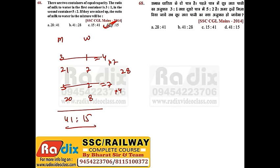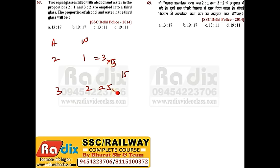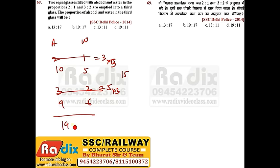Question 69. Two equal glasses are filled with alcohol and water. The ratio of alcohol to water is 2:1 in the first and 3:2 in the second. Find the proportion of alcohol in the mixture. Sums are 3 and 5; LCM is 15. Multiply first by 5: alcohol = 10, water = 5. Multiply second by 3: alcohol = 9, water = 6. Adding: alcohol = 19, water = 11. Answer is option D.